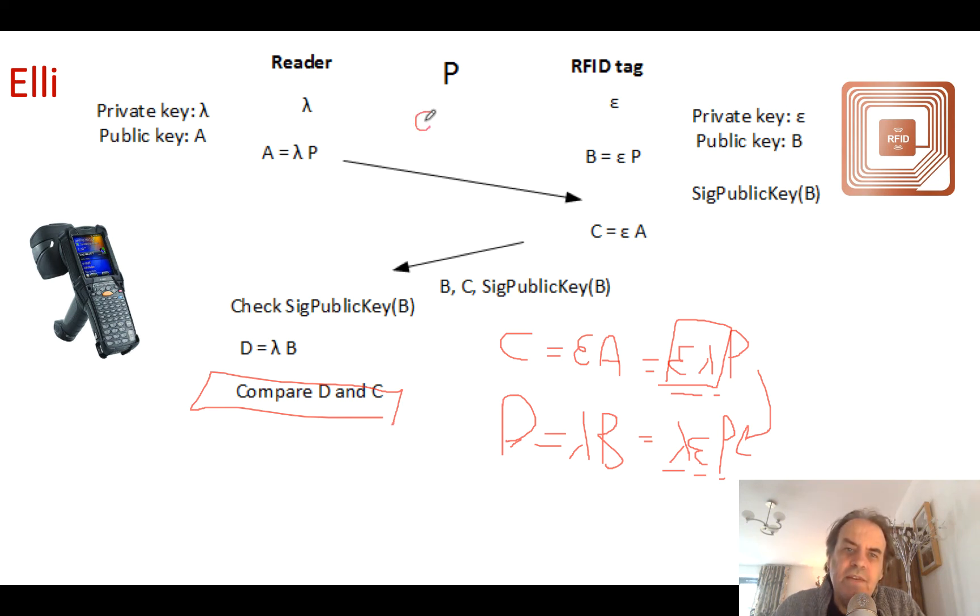If we're Eve, then Eve will try to pretend to be the RFID tag, but unfortunately she doesn't know what the value of epsilon is, so she won't be able to generate a valid value here for the correct result. She doesn't even know lambda.